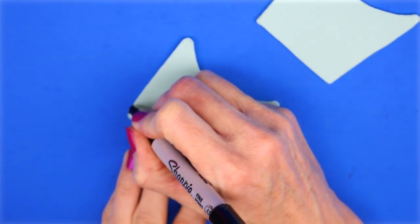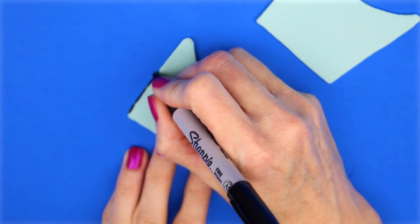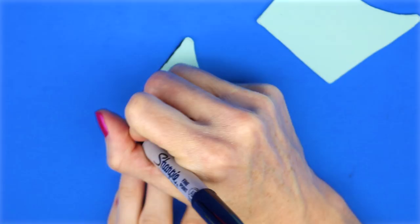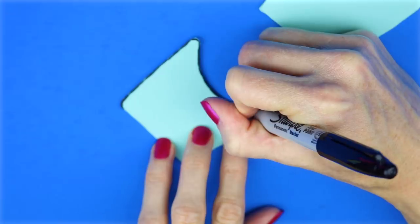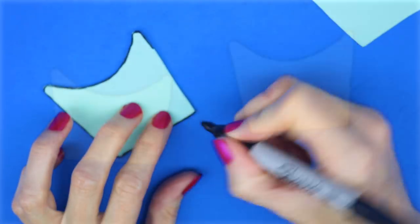With a Sharpie, I went around all of the sides of the fry box and I did that for both pieces. Here are what mine look like at this point.